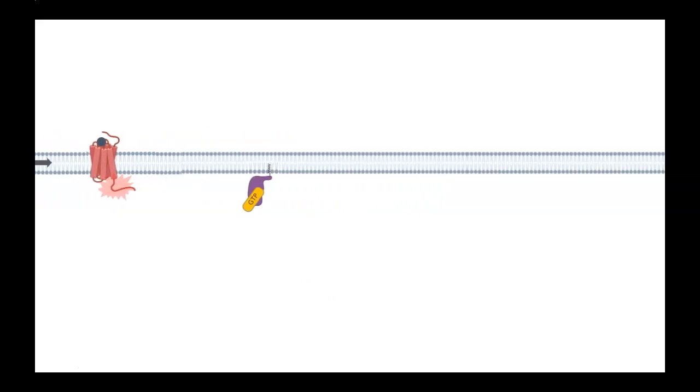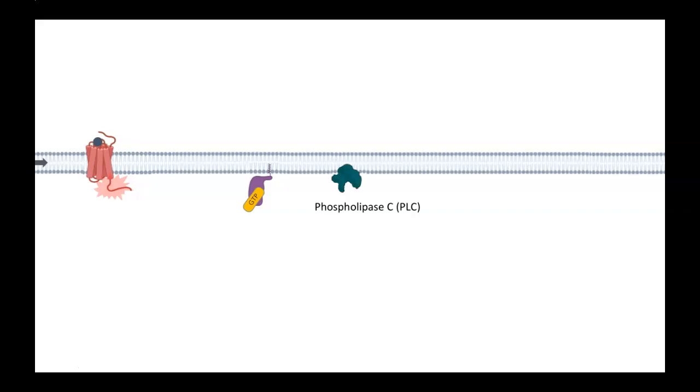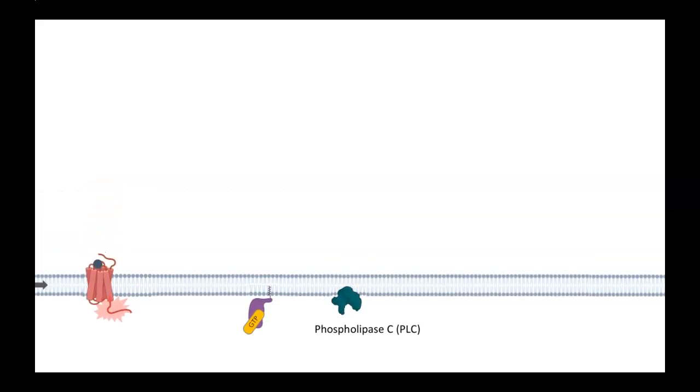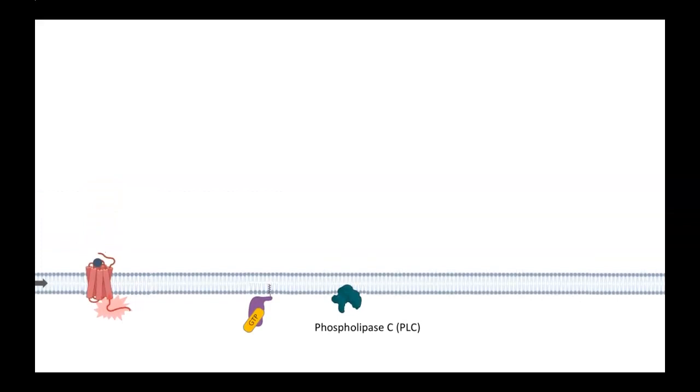Let me move this over so we can see what happens next. The main target for the activated alpha subunit is a protein called phospholipase C. As the name suggests, this is an enzyme. It's going to cleave phospholipids. To show you how this works, I'm going to blow up just a little bit of this membrane so we can talk about it.